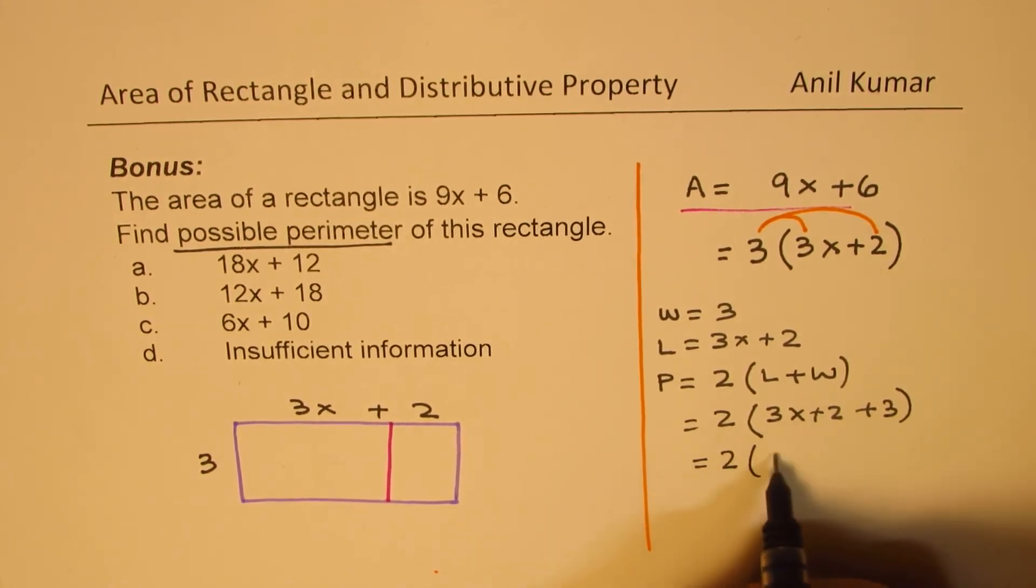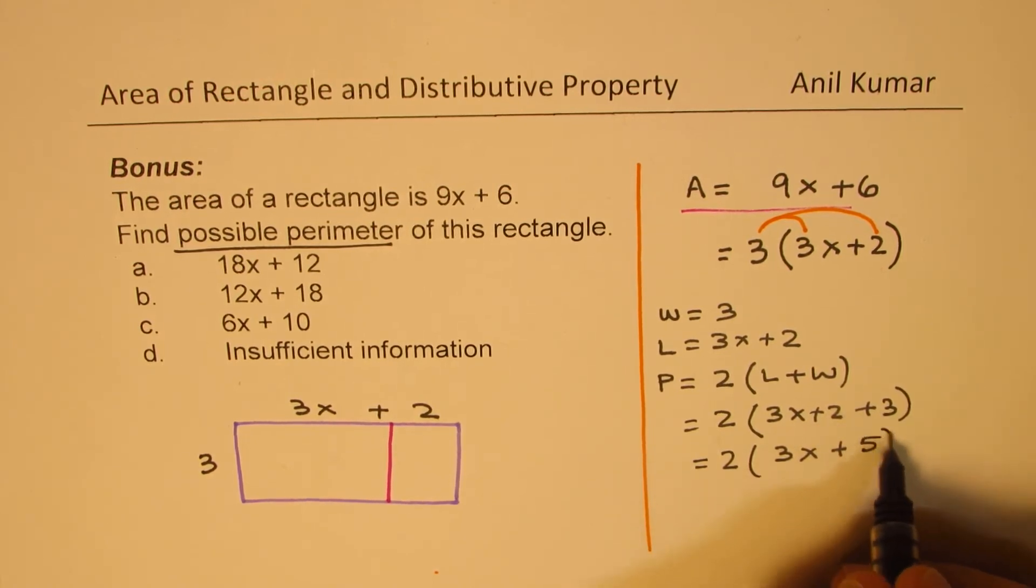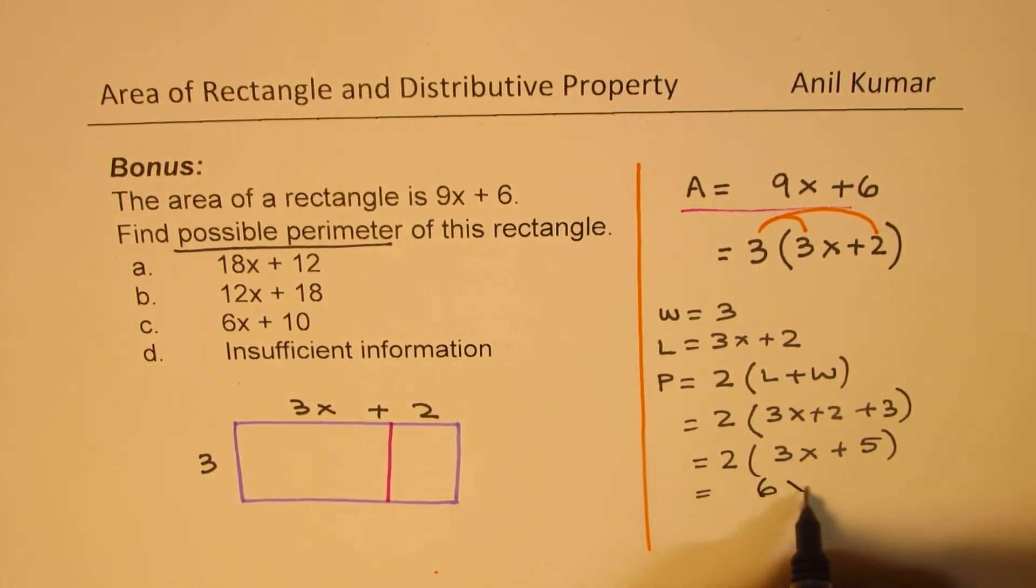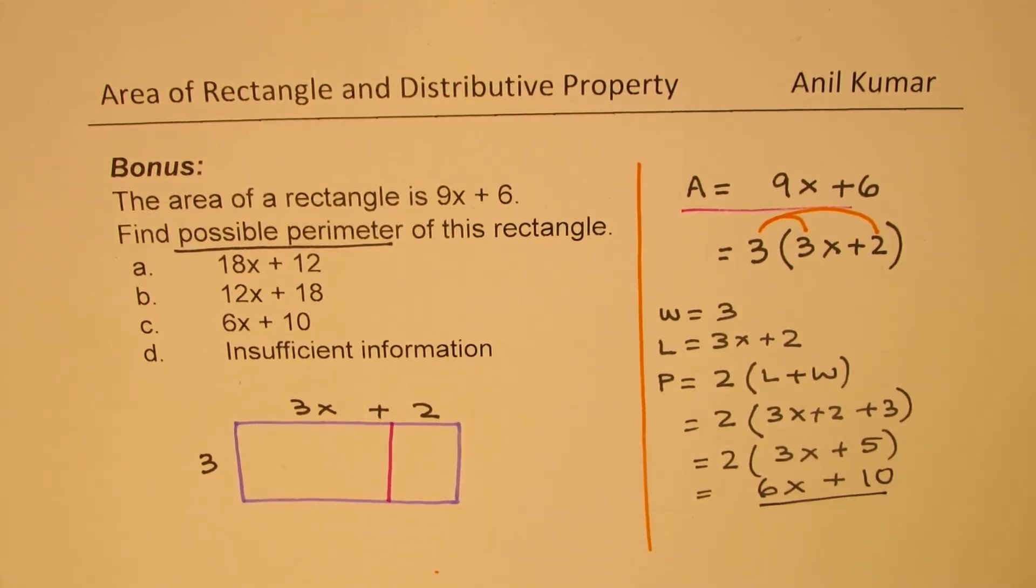So we get 2 times (3x + 2 + 3) which is 2 times (3x + 5). When you multiply 2 times 3x, we get 6x, and 2 times 5 is 10. So the perimeter is 6x + 10.